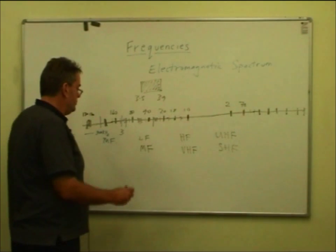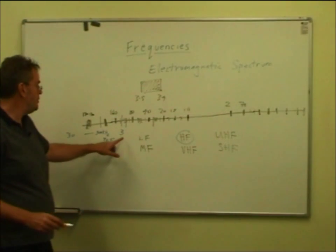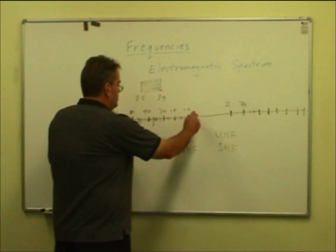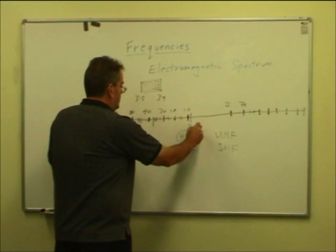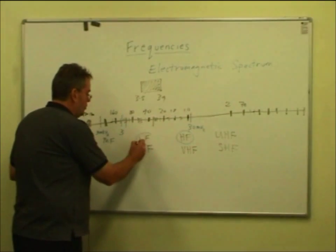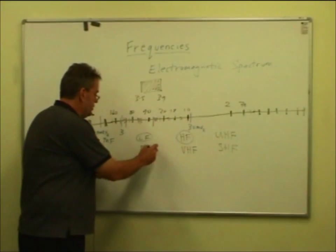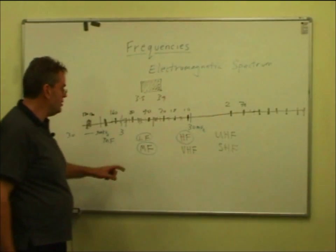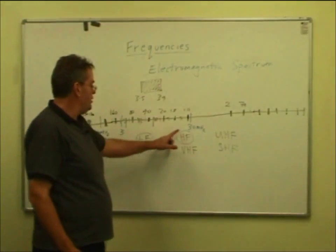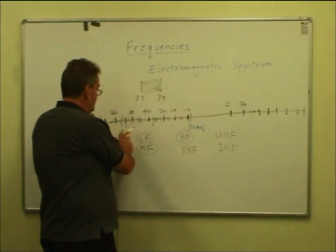High frequency covers 3 megahertz to 30 megahertz. So each band chunk is a multiple of 10. Okay, 30 to 300, 300 to 3,000 kilohertz, 3 megahertz to 30 megahertz, a multiple of 10. So that's the high frequency band.